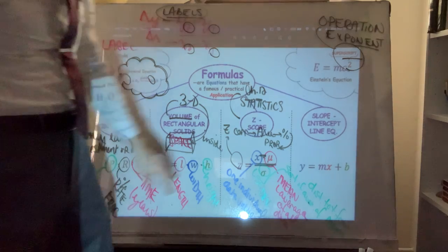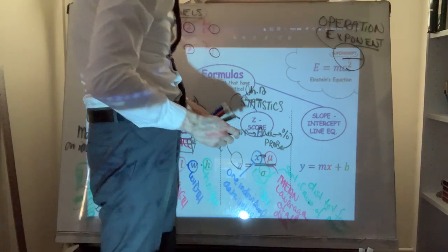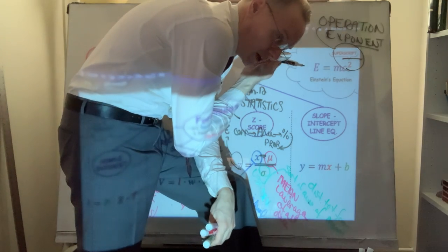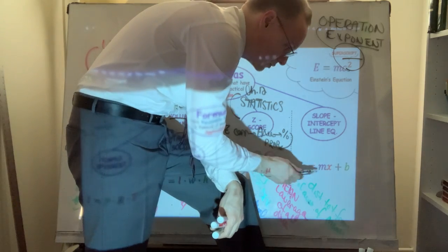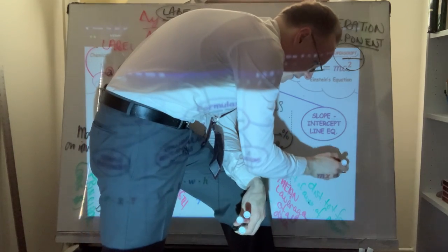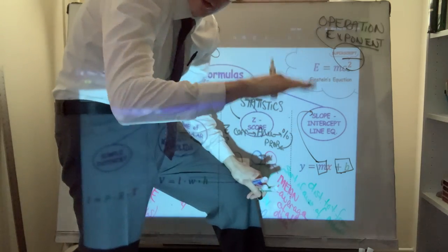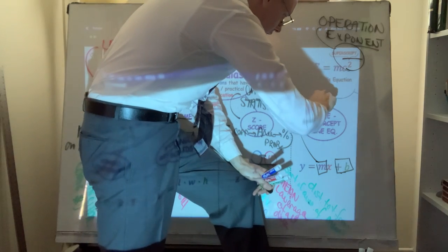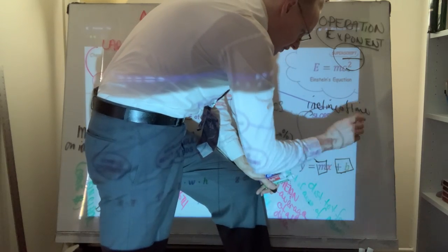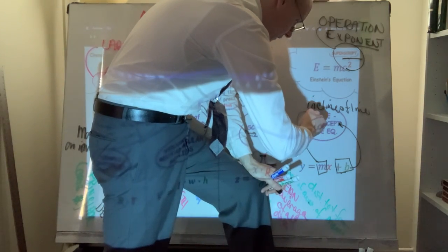The slope-intercept form of the line equation: if you've taken algebra in high school you've probably seen this before. Y — which is one half of a coordinate ordered pair — is equal to m times x plus b. It's these two parts: m is the slope, which is basically the pitch or incline of the line.